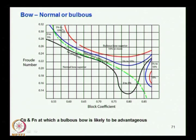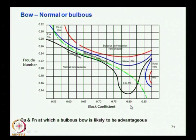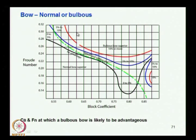These lines show 0 to 5 percent, 5 to 10 percent, and about 10 percent bandwidth savings. If the bulb is properly designed for ships in certain ranges, the advantage is more than 10 percent. For a container ship with block coefficient around 0.65 and Froude number about 0.3, you can see there is a considerable advantage in providing a bulb — the saving can be 10 percent or more.